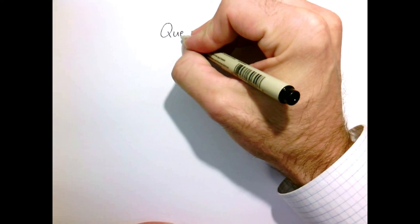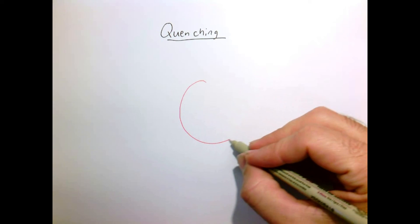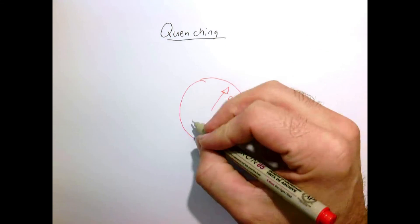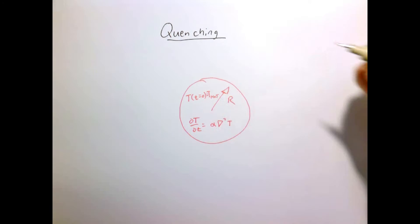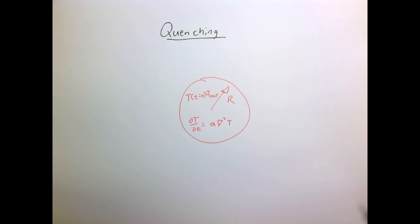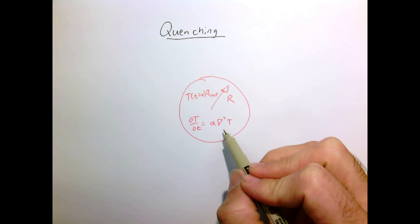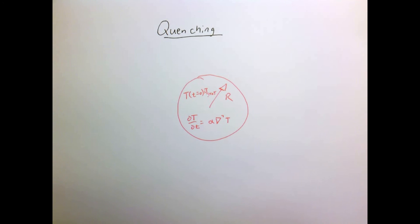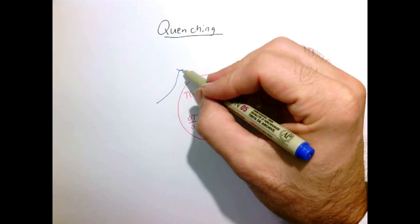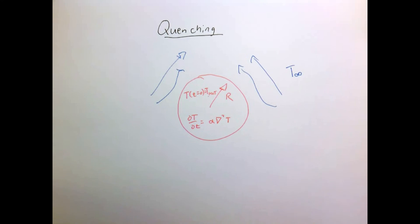Let's discuss my favorite problem in heat transfer: quenching. I'm going to have a hot object — a sphere of radius R. The heat equation is going to govern the temperature distribution inside the sphere. Initially at time equals zero, it's all going to be at uniform temperature, T hot. The sphere is going to be immersed in a fluid that is cold at some temperature, T infinity.